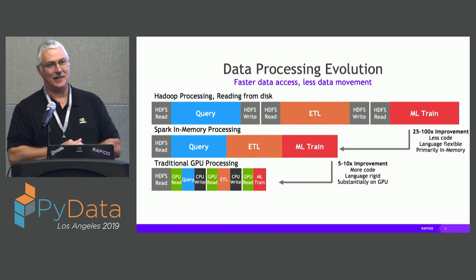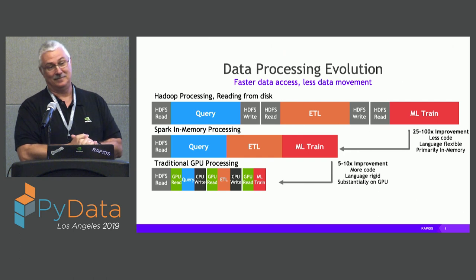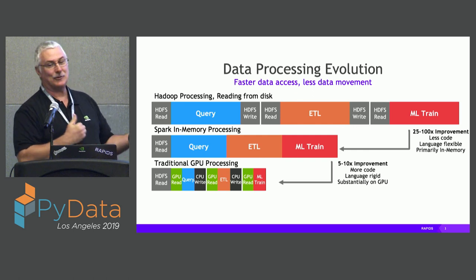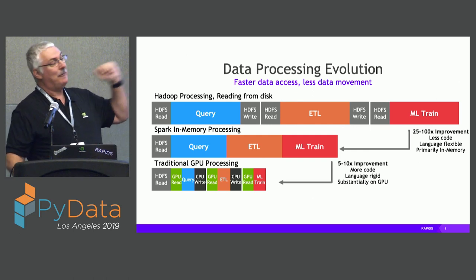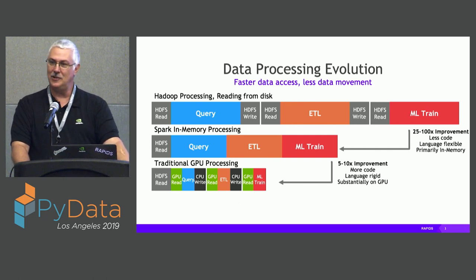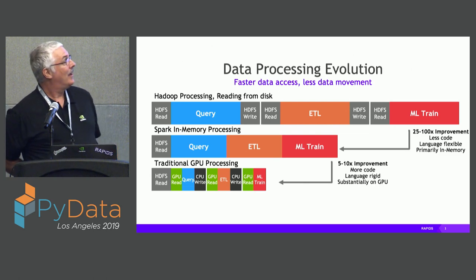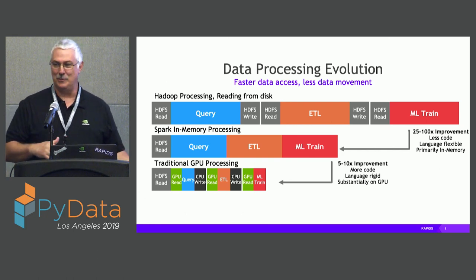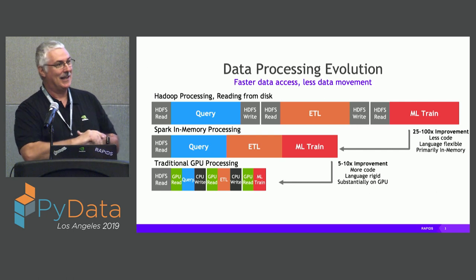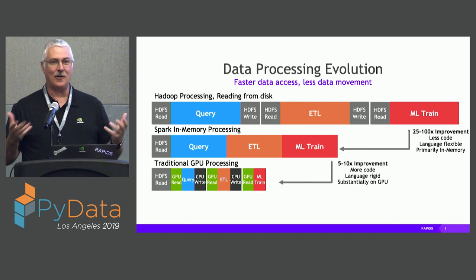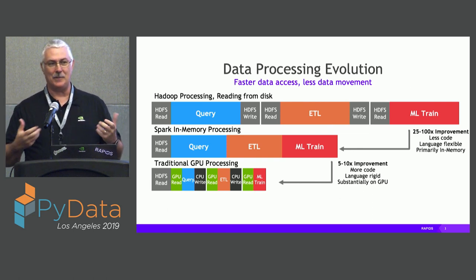The problem with Hadoop was it was slow. At the time when it first came out we considered it fast because we were working on even slower systems, but it still took hours to do queries — running a piece of the query, saving temporary results, then reading those back. It gave fault tolerance and didn't require expensive machines. Then came Spark, and when Spark first came out I was amazed at how fast it was compared to Hadoop — it loaded everything in memory — but it still took hours to run queries.